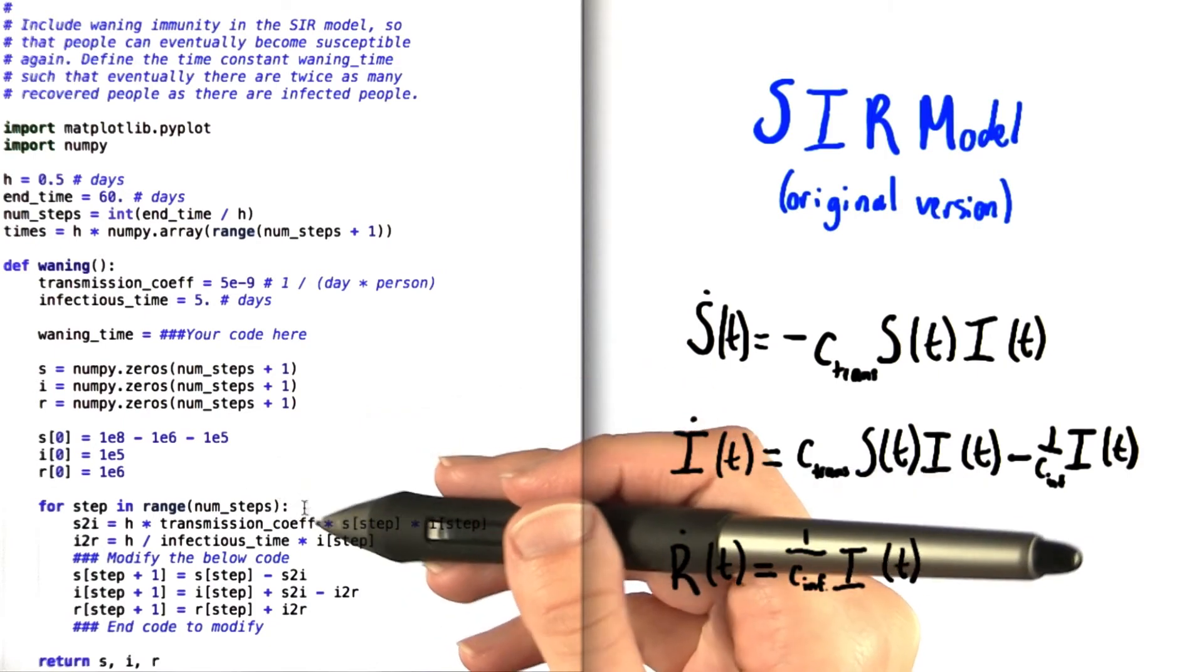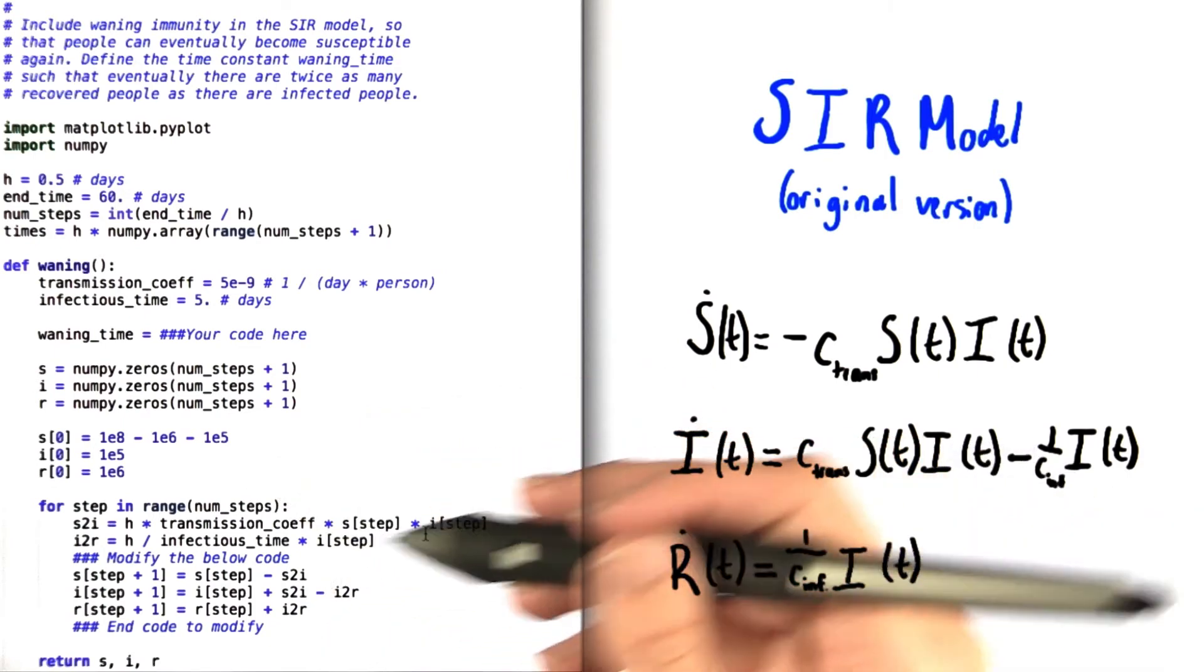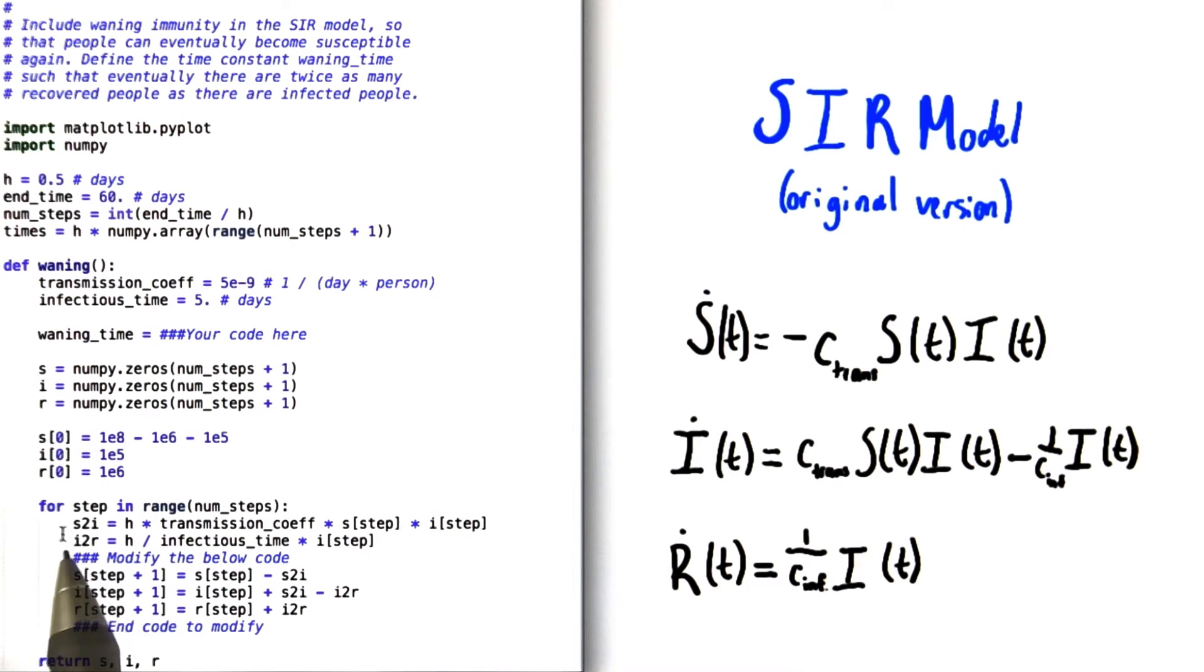Next comes a for loop, part of which you'll have to fill in. We've given you S2I right here, which is the number of people moving from susceptible to infected during one time step. We've also given you I2R, which is the number of people going from infected to recovered in a given time step.